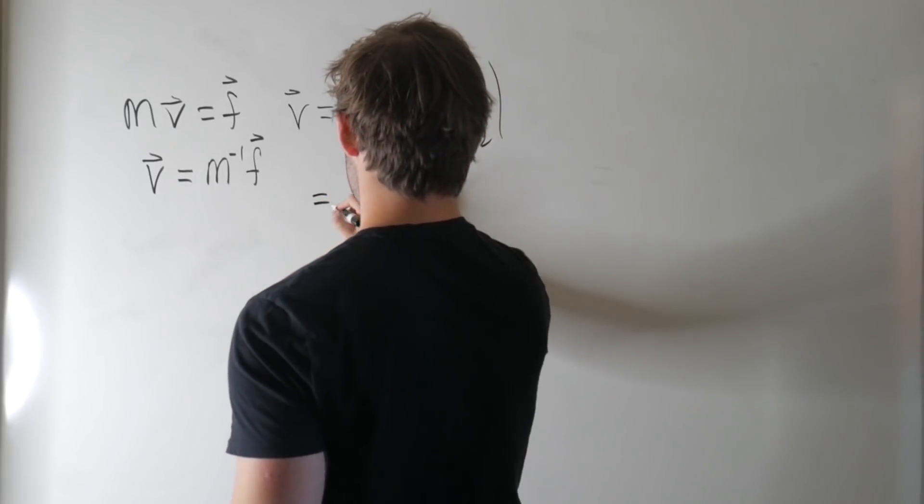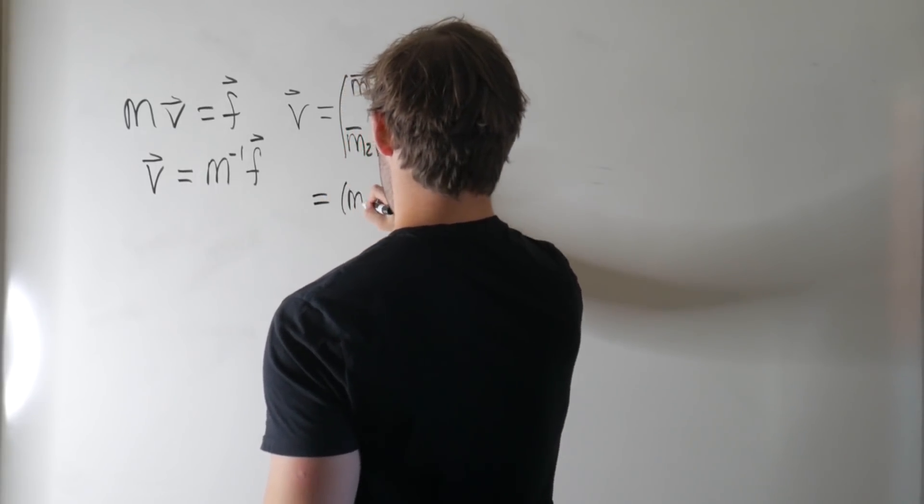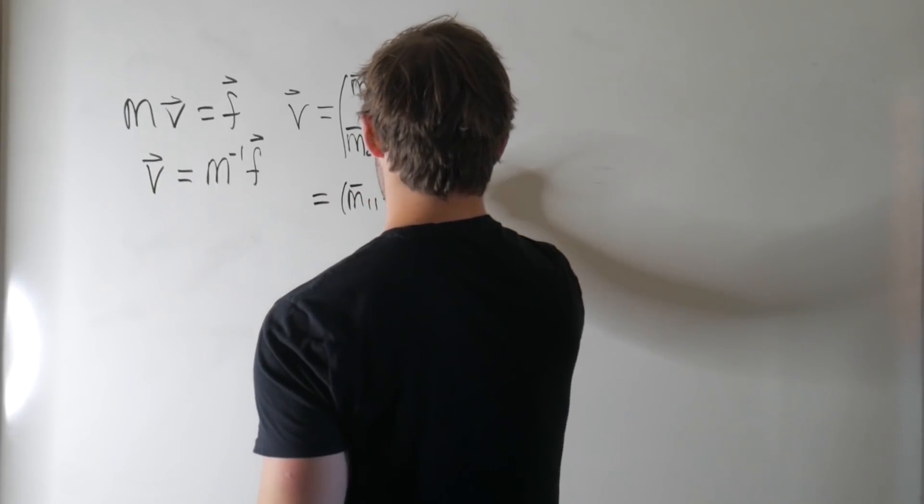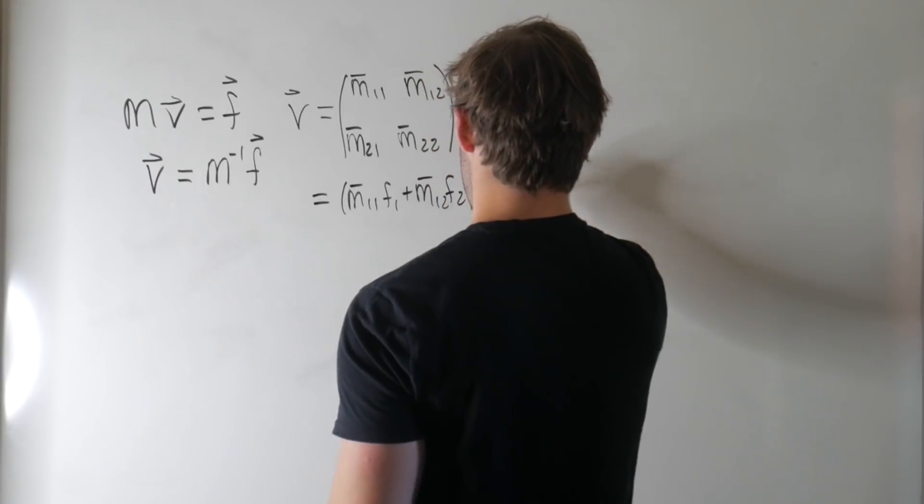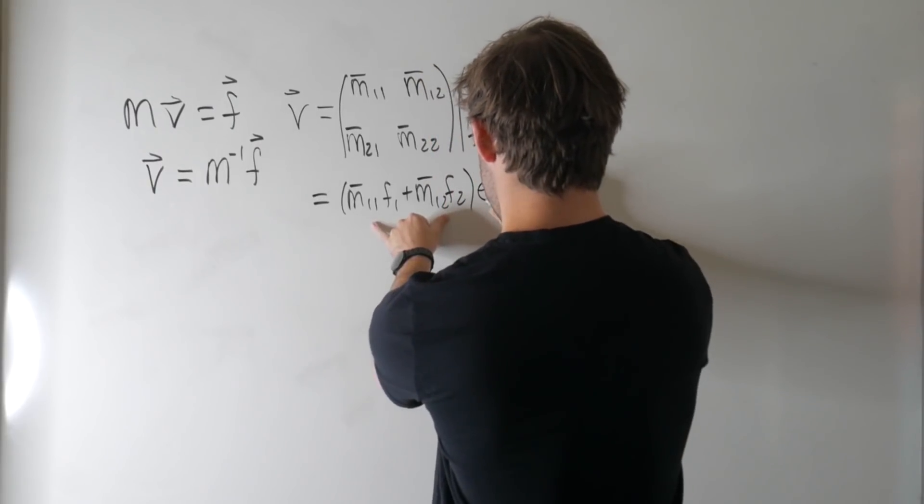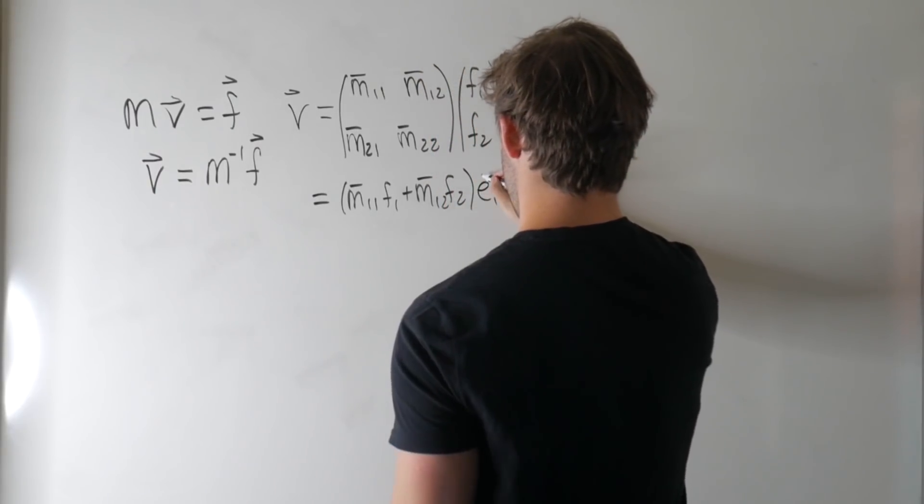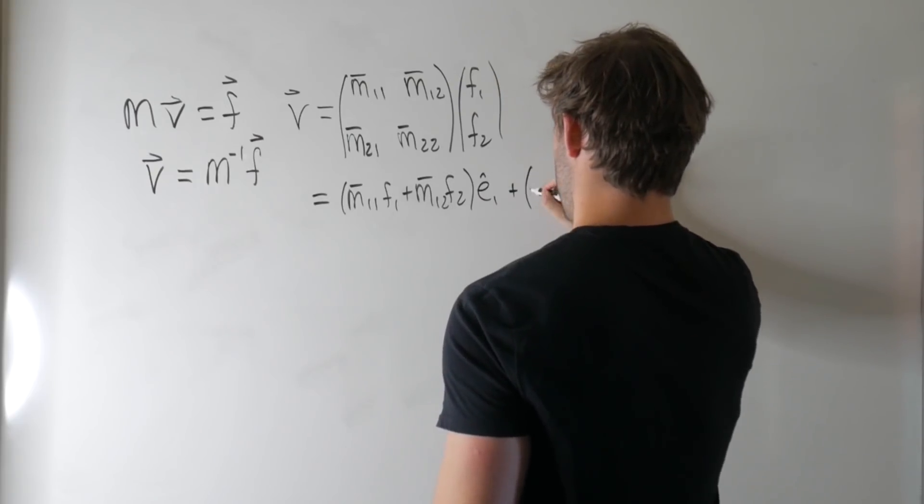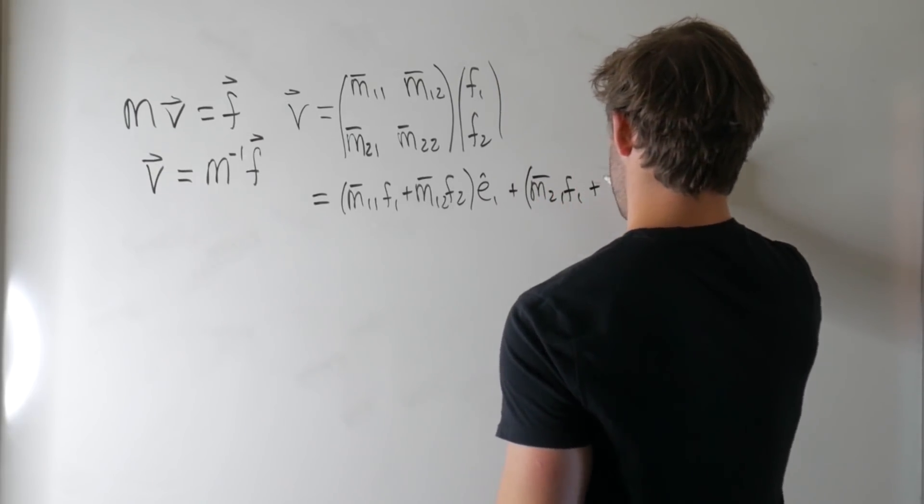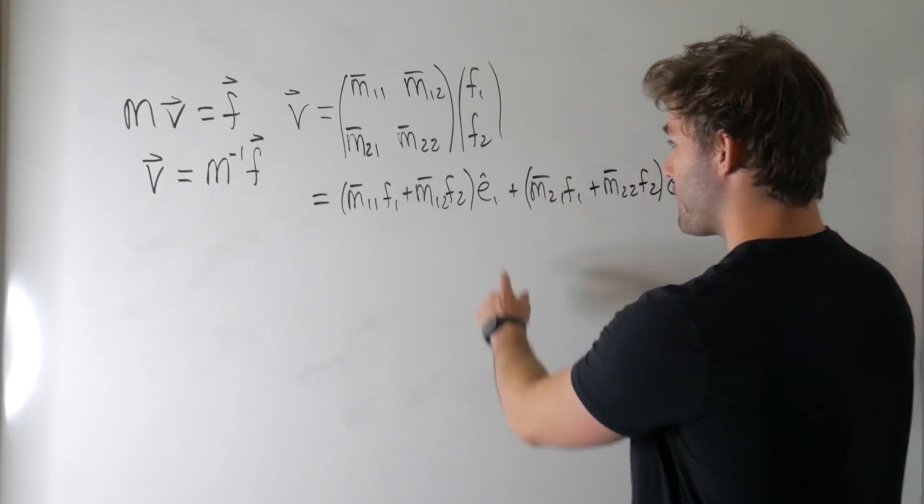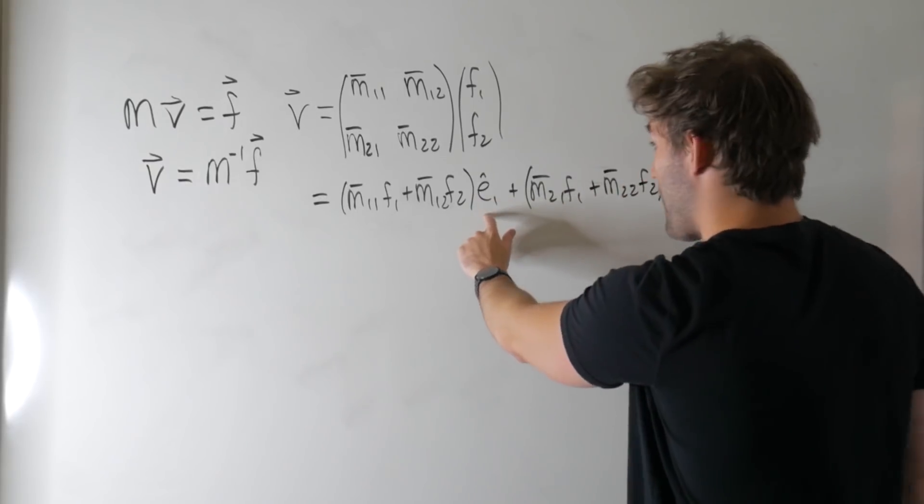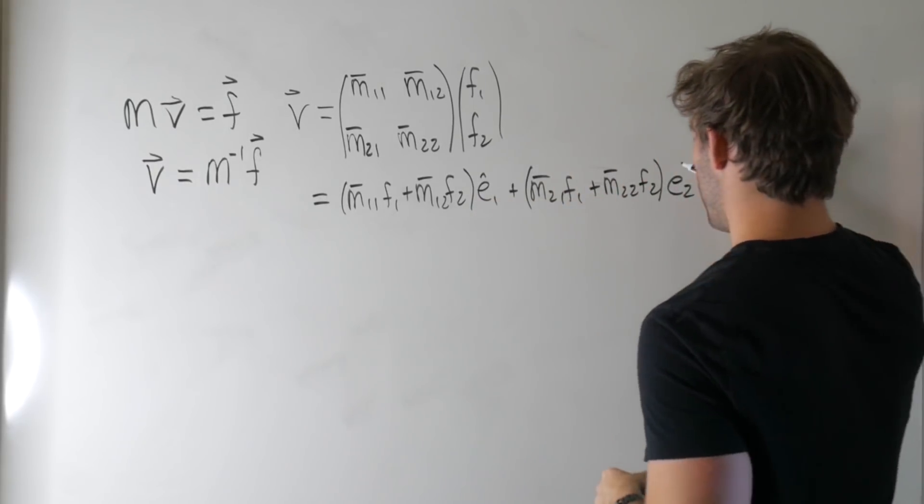Multiply all this stuff out, so we've got this is equal to M 1 1 bar F 1, plus M 1 2 bar F 2, and then this is going to be our first basis vector, times our first basis vector, plus M 2 1 bar F 1, plus M 2 2 bar F 2, times our second. So this could be our X hat, or I hat, and our Y hat, and so forth.